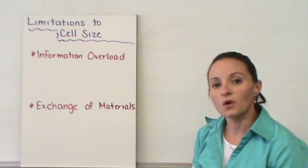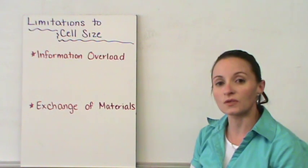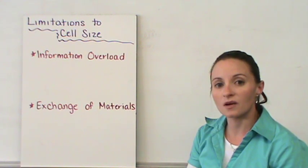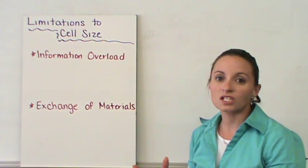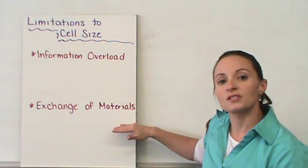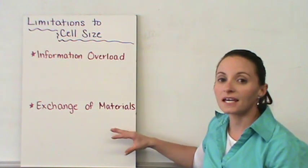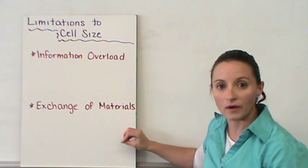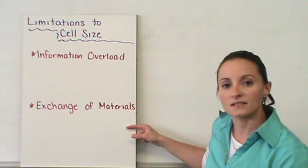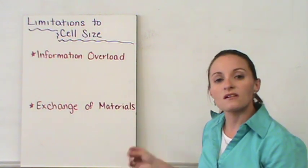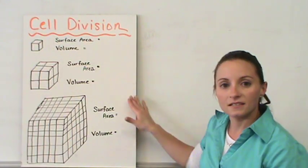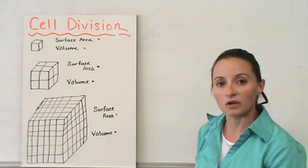The cell membrane has transport proteins that help materials go back and forth. The purpose of the cell membrane is to control what goes in and out of the cell — those nutrients coming in and that waste going out. The larger the cell, the more demand on the cell membrane, and it can't handle the demands once it reaches a certain point. That's the second limitation to cell size. So when cells start getting bigger, they will divide to make themselves smaller and more efficient.